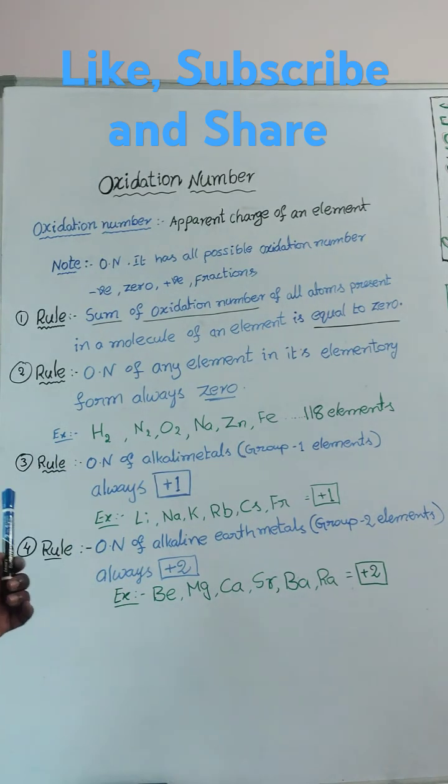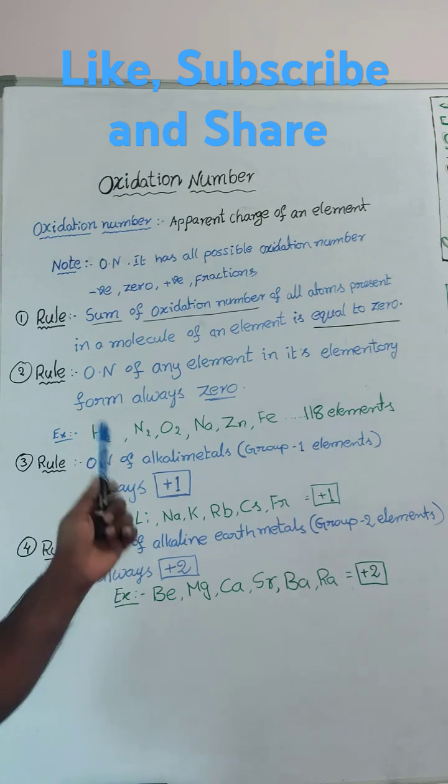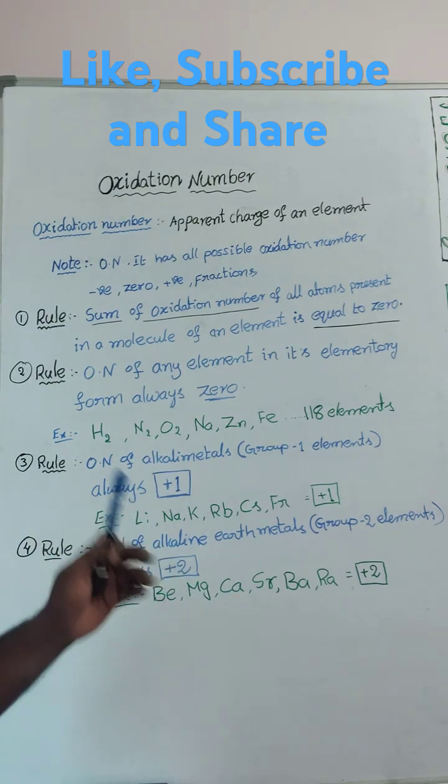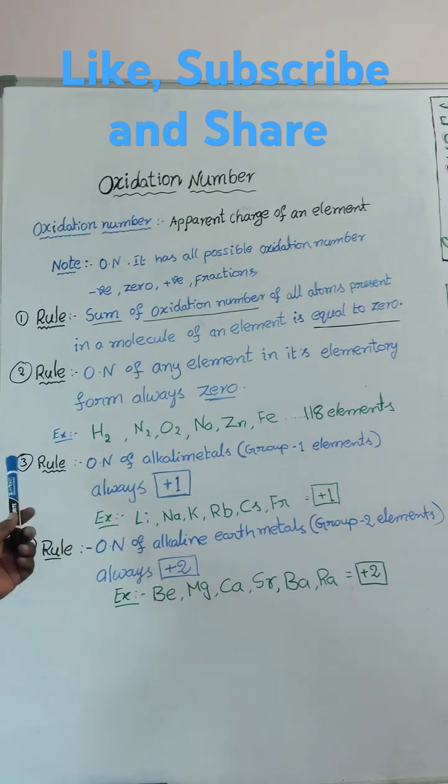If it is there in the compound, then loss or gain occurs. At that time it will be changed in oxidation number, until that element form 0.